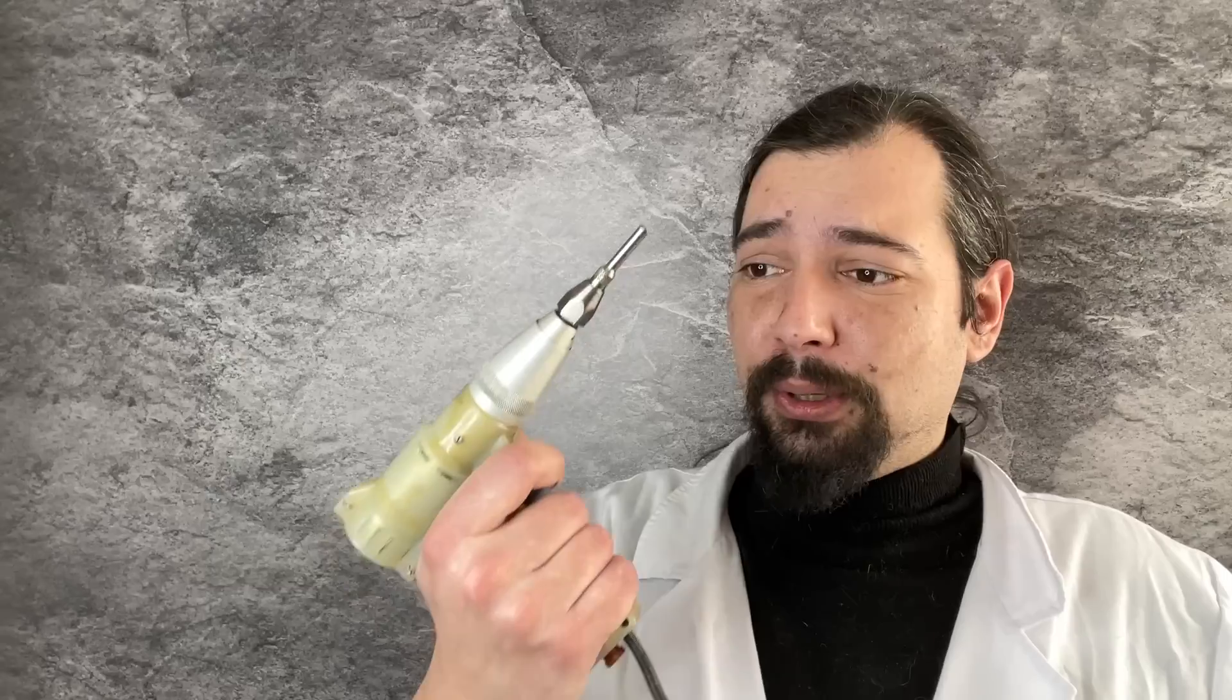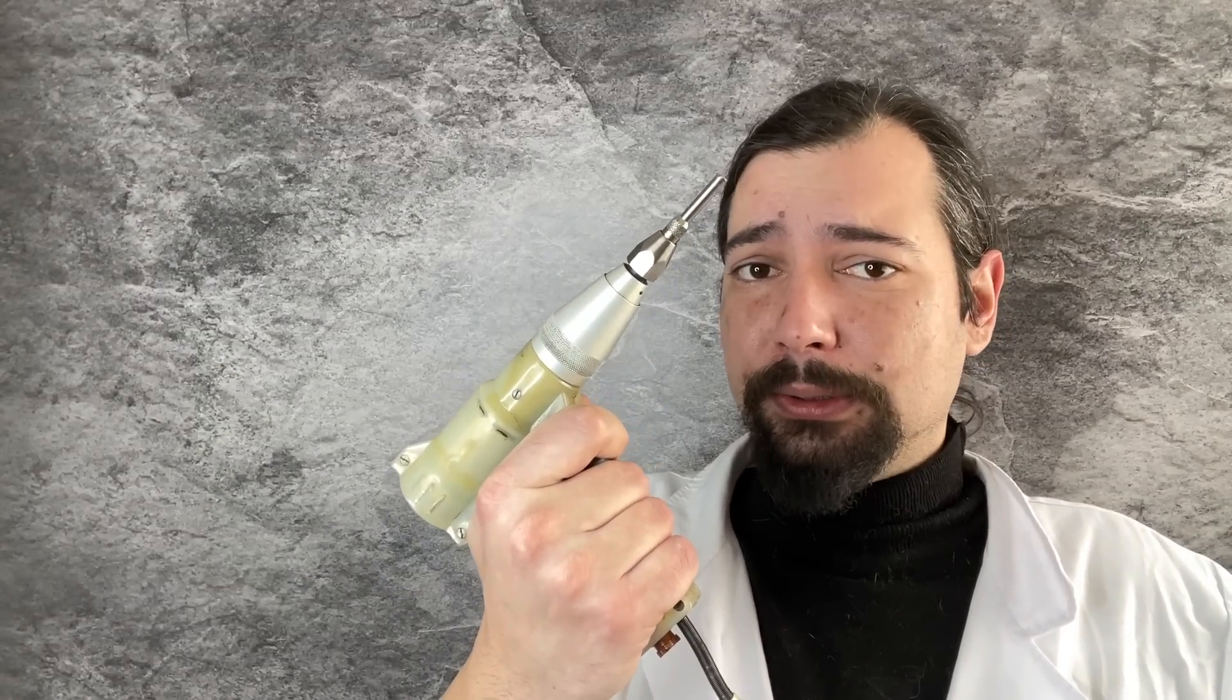Welcome back to our laboratory of the endless exploration of Chernobyl technology. Today I want to show you this thing, which is the original Soviet-made tool for wire wrap. It was a very popular technology of assembling electronics back in the 70s.